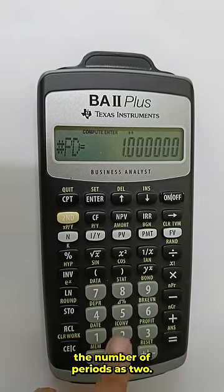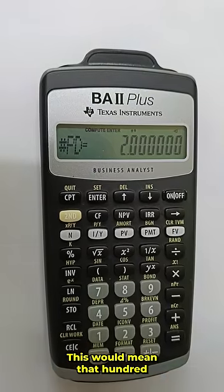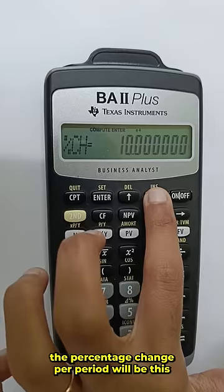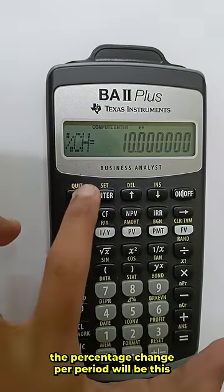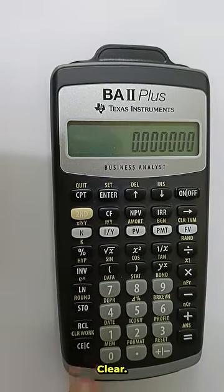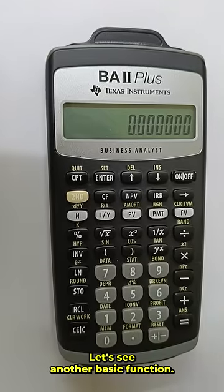Now this stands for the number of periods. Suppose if you take the number of periods as 2, this would mean that 100 is becoming 110 in two periods. And in this case the percentage change per period will be this. Clear. Let's see another basic function.